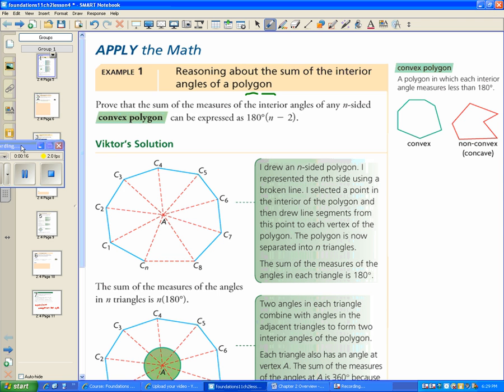First of all, quick little detour: convex versus non-convex. Convex means each interior angle measures less than 180. Non-convex or concave means that you have an angle that's bigger than 180. So we're looking at convex here.